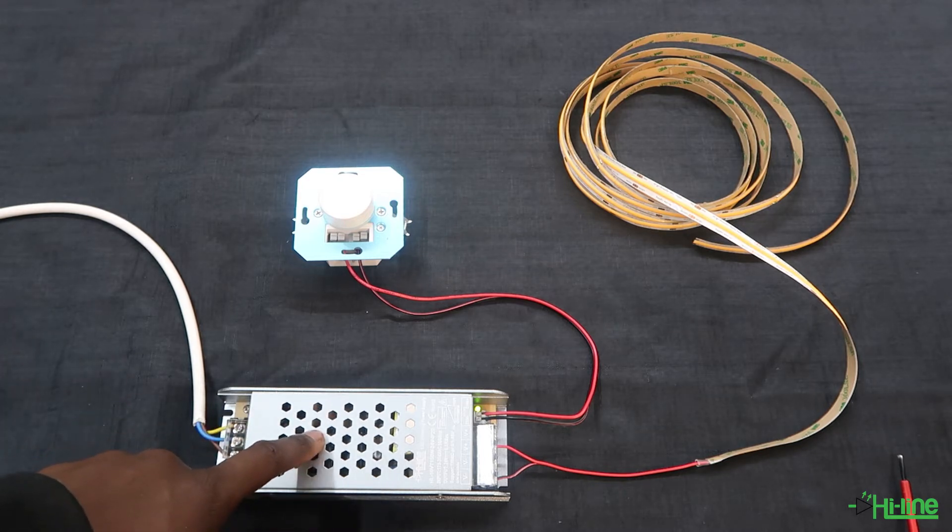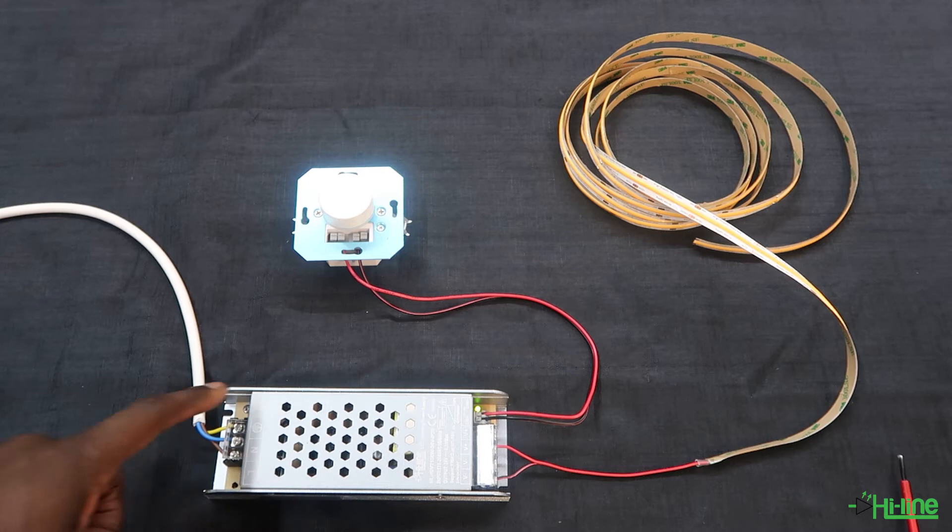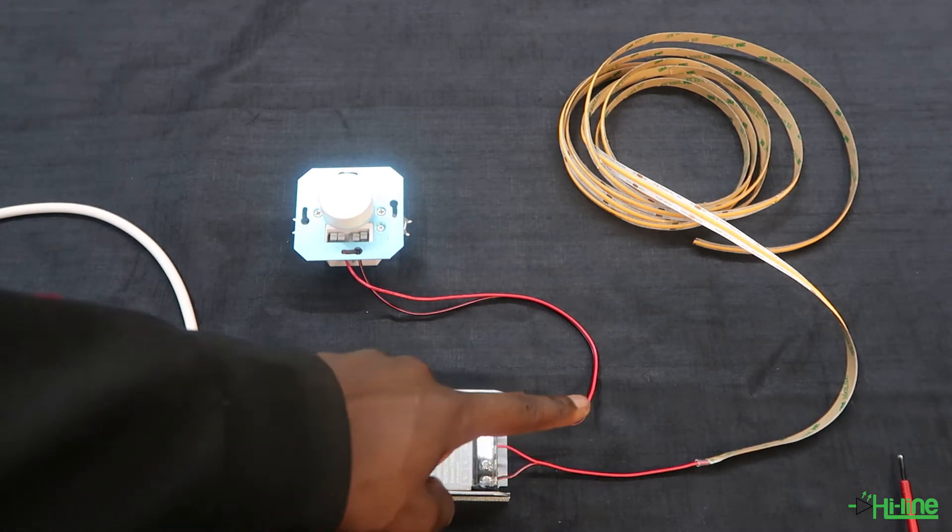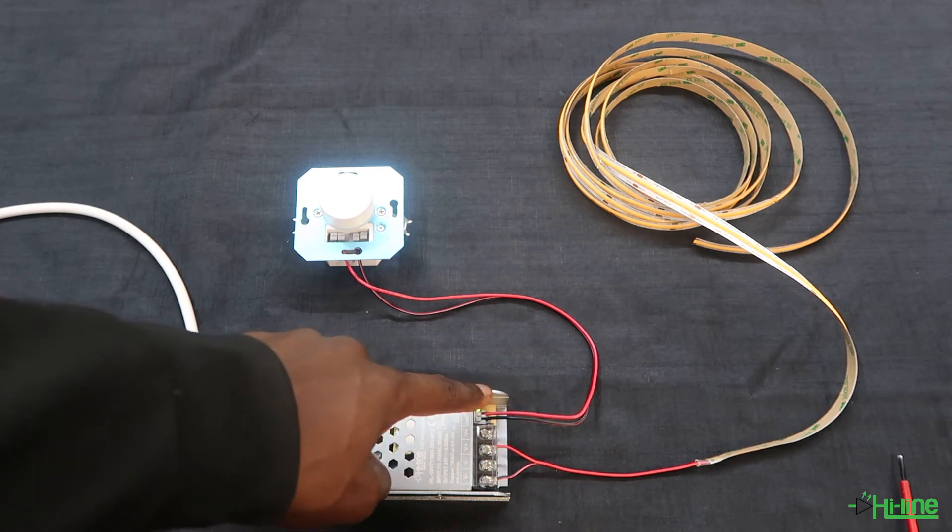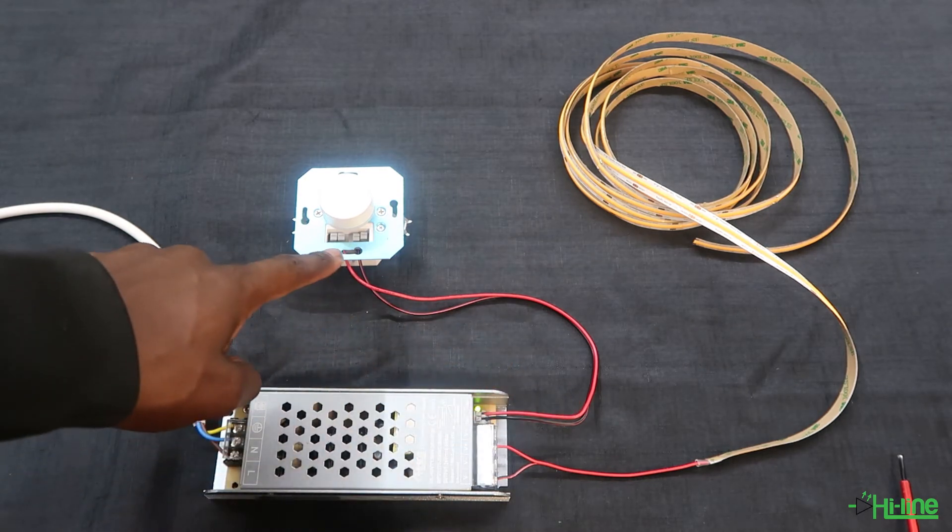Here we have an IP20 hybrid driver with our live, neutral, and earth wire going in. Then we have 24 volts going out connected to some LED strip, and here you have your control cable going into your 0-10 dimmer switch.